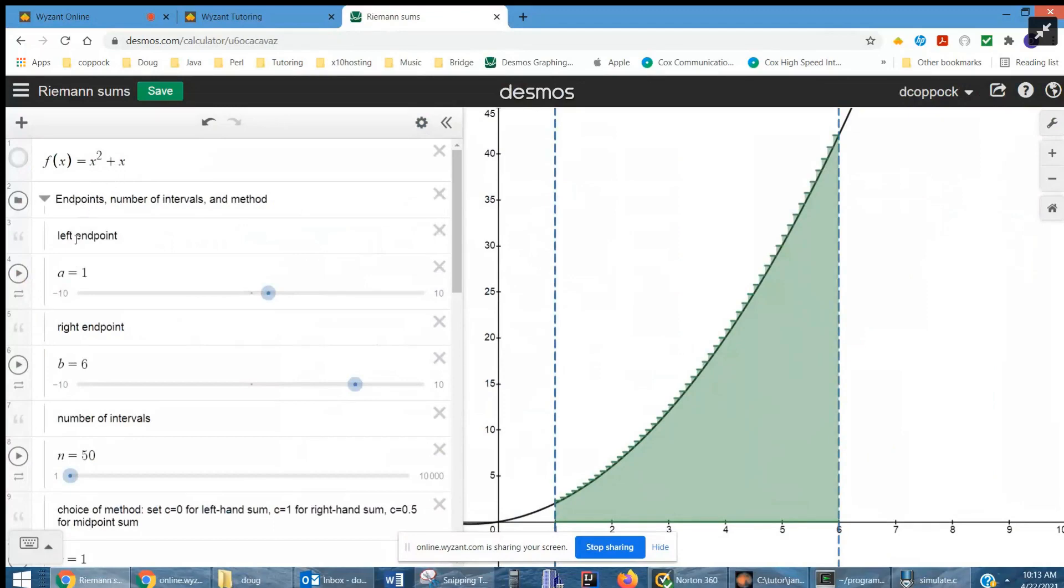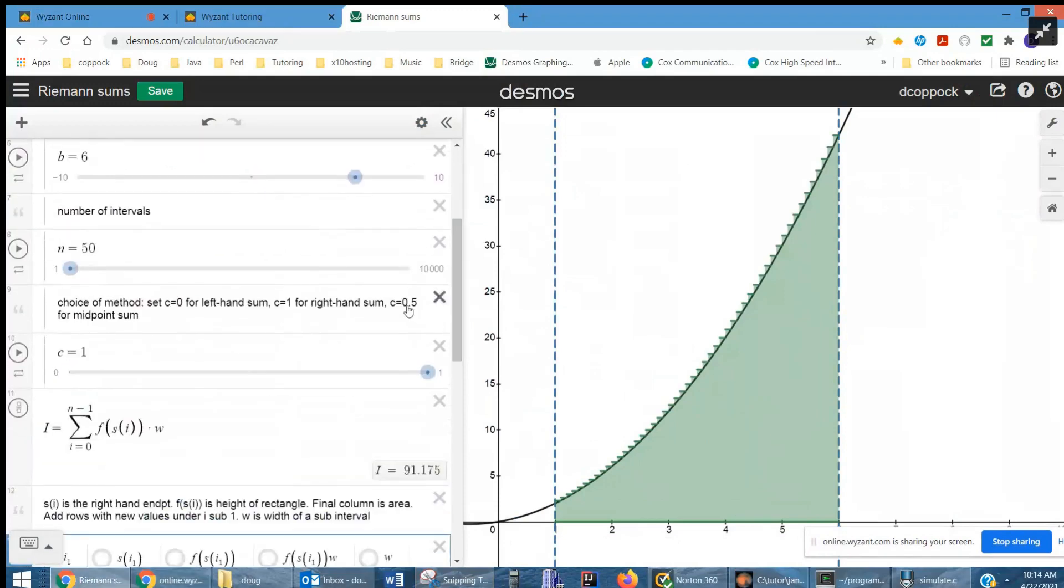We can enter the left endpoint, which is 1, letter A. B is 6, the right-hand endpoint. Let me move this out of the way. And then the number of intervals. So if I reduce the number of intervals to 5, you can get a better picture of what the rectangles look like. And now the estimate is 110, which is way overestimate.